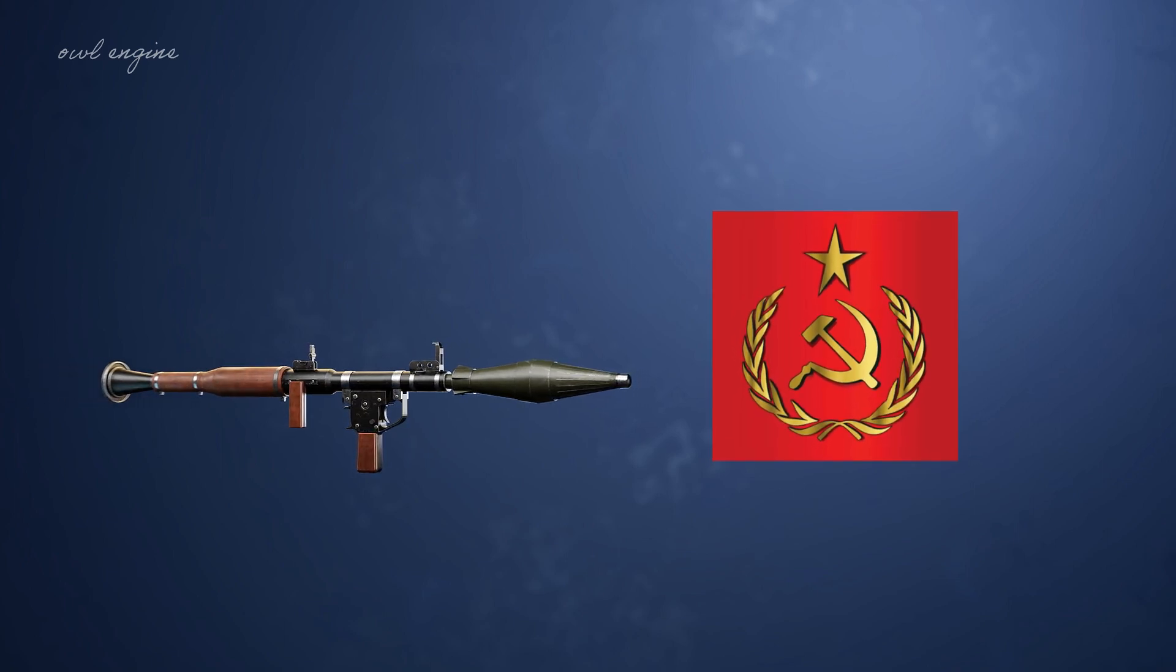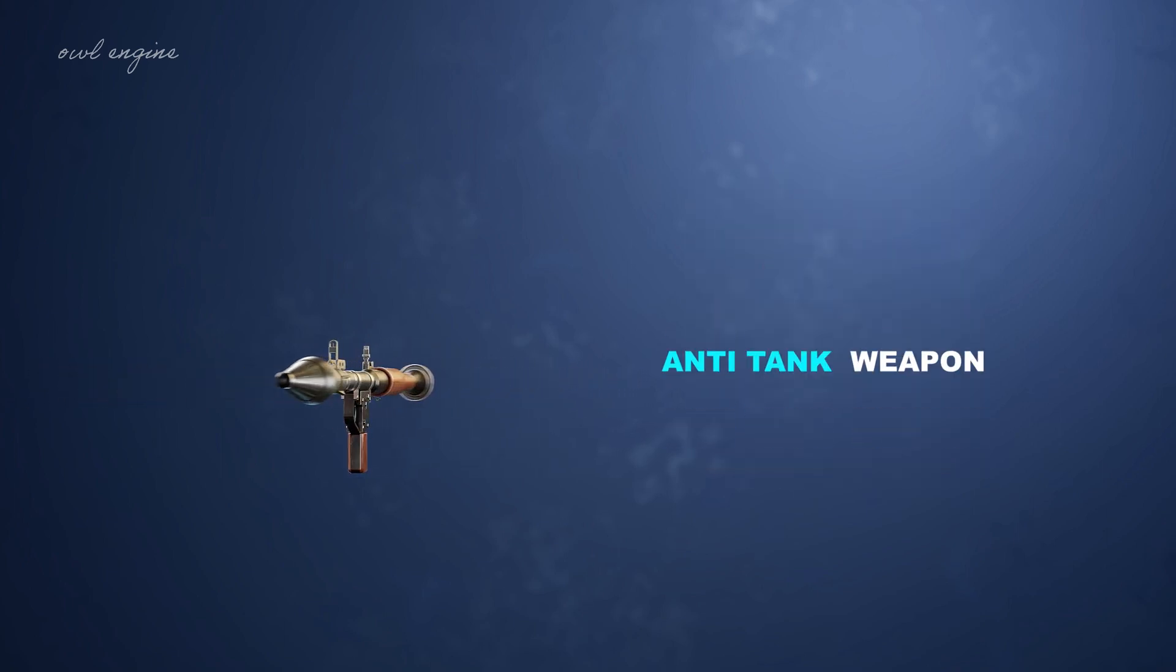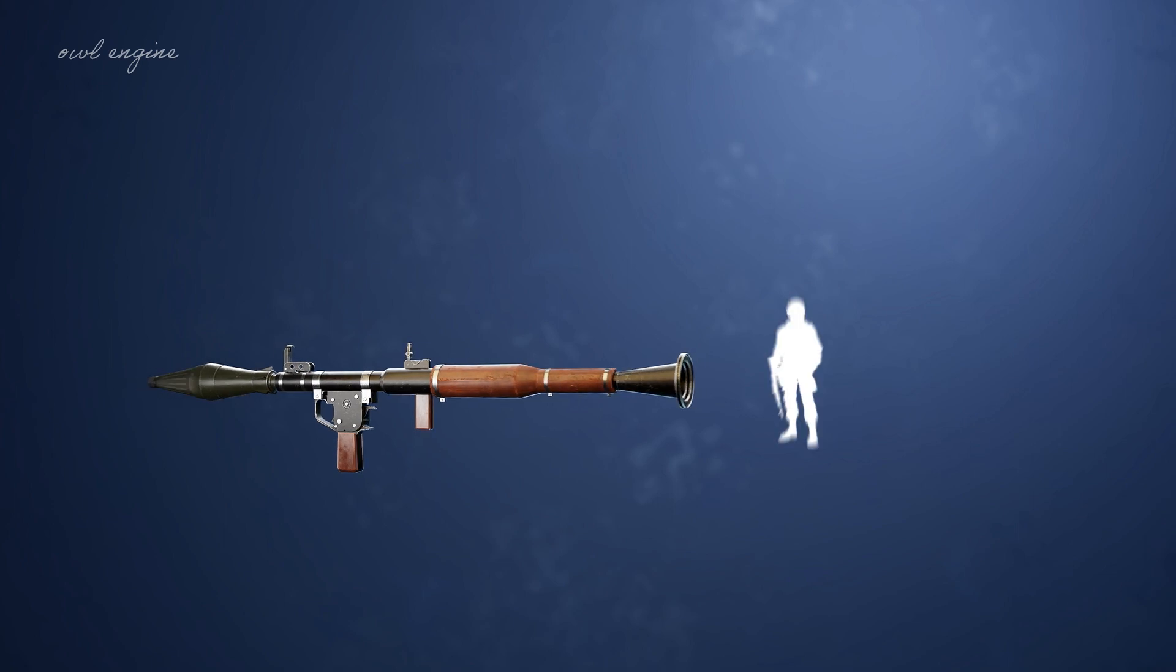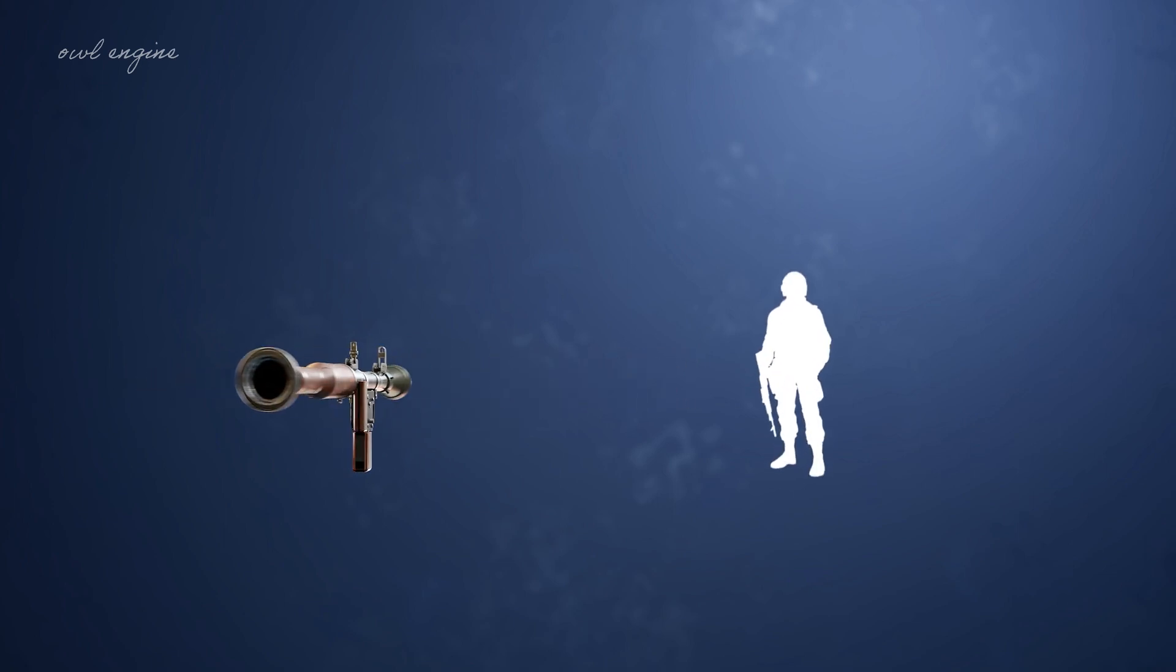Developed by the Soviet Union in the 1950s and used as an anti-tank weapon, the RPG-7 is designed to be carried and operated by a single soldier or a small team.